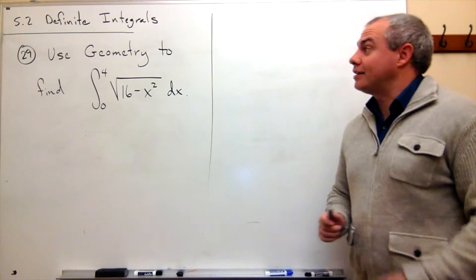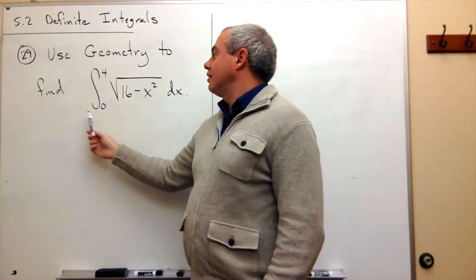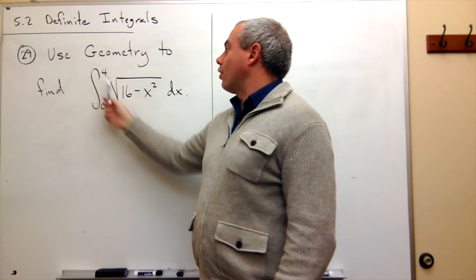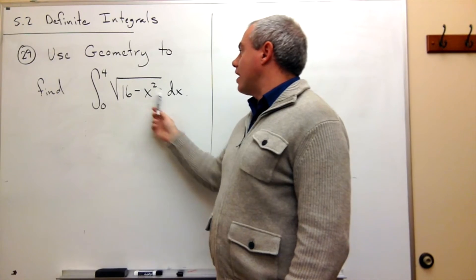In number 29, we're asked to use geometry to find the integral from 0 to 4 of the square root of 16 minus x squared dx.